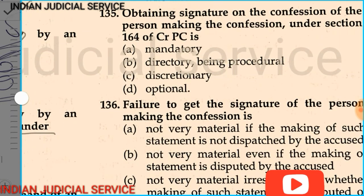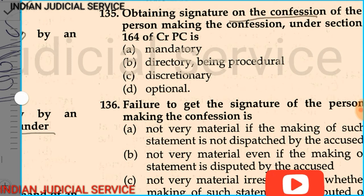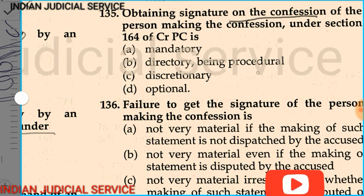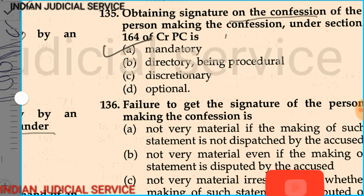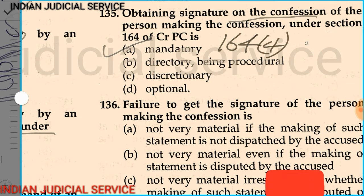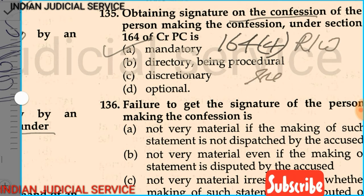Question number 135: The obtaining of a signature on a confession of the person making the confession under Section 164 of CrPC is — mandatory; discretionary; being procedural discretionary; or optional? The answer is mandatory. The signature of the witness or accused is a mandatory provision under Section 164 Subsection 4 read with Section 281 CrPC.